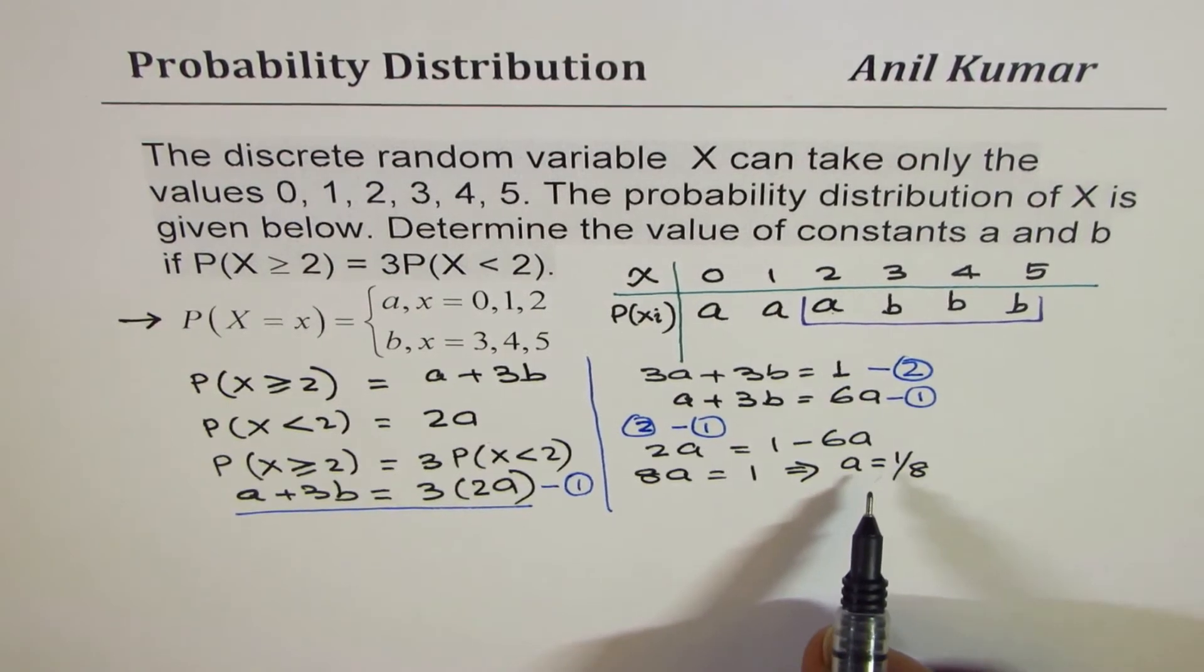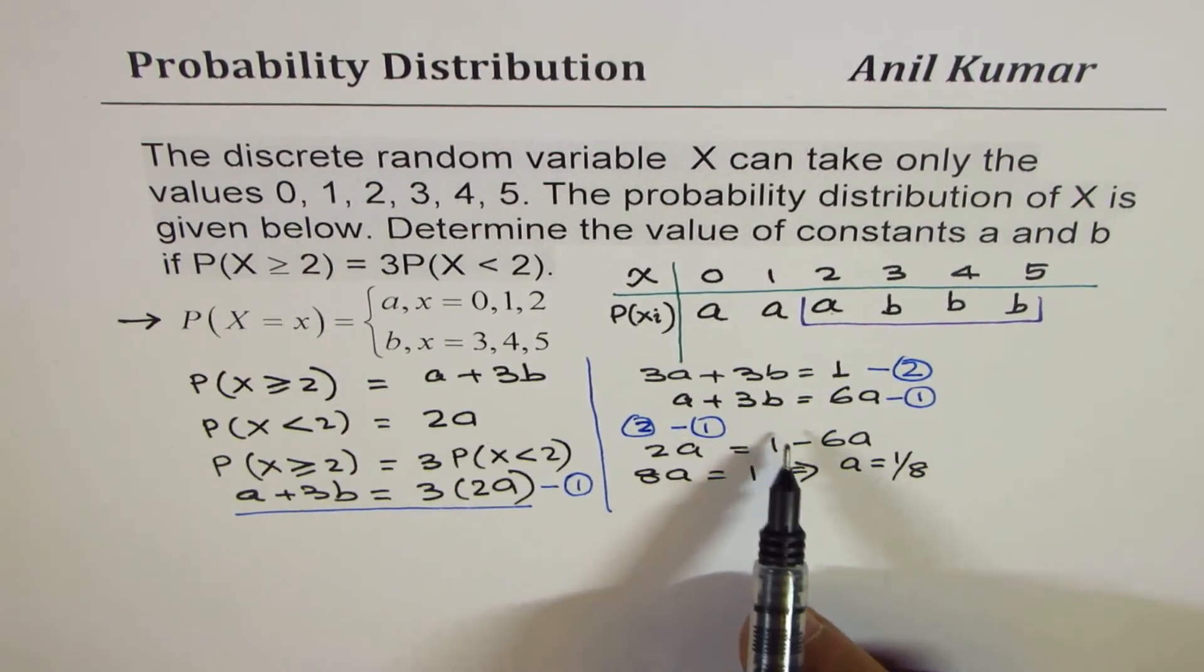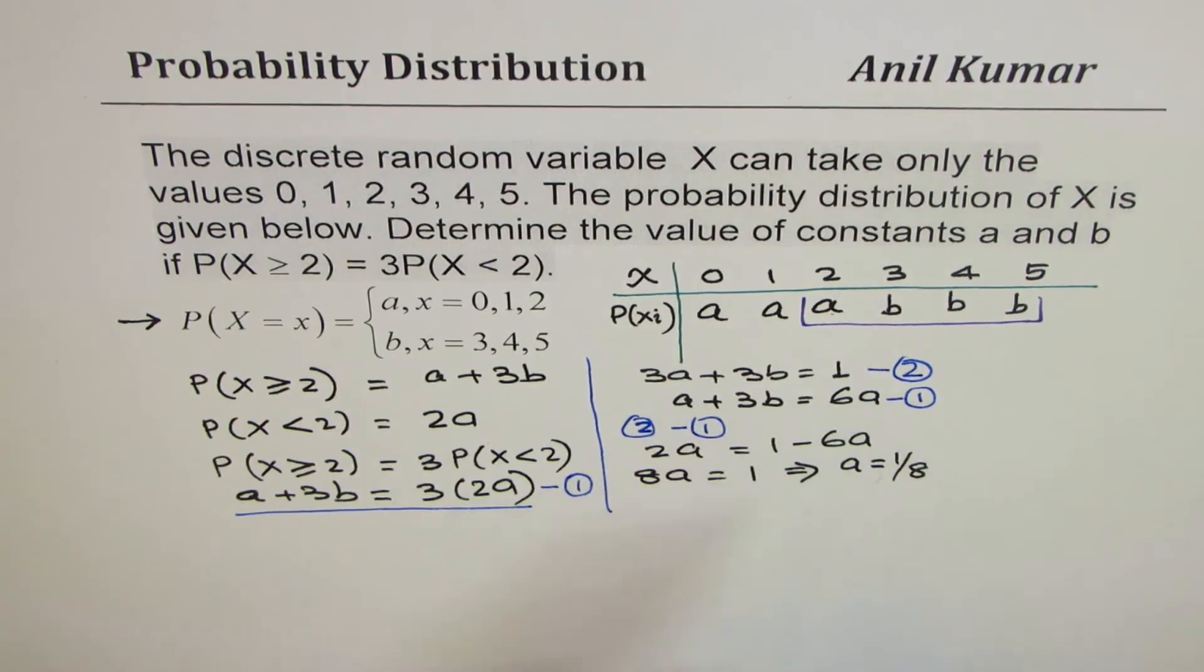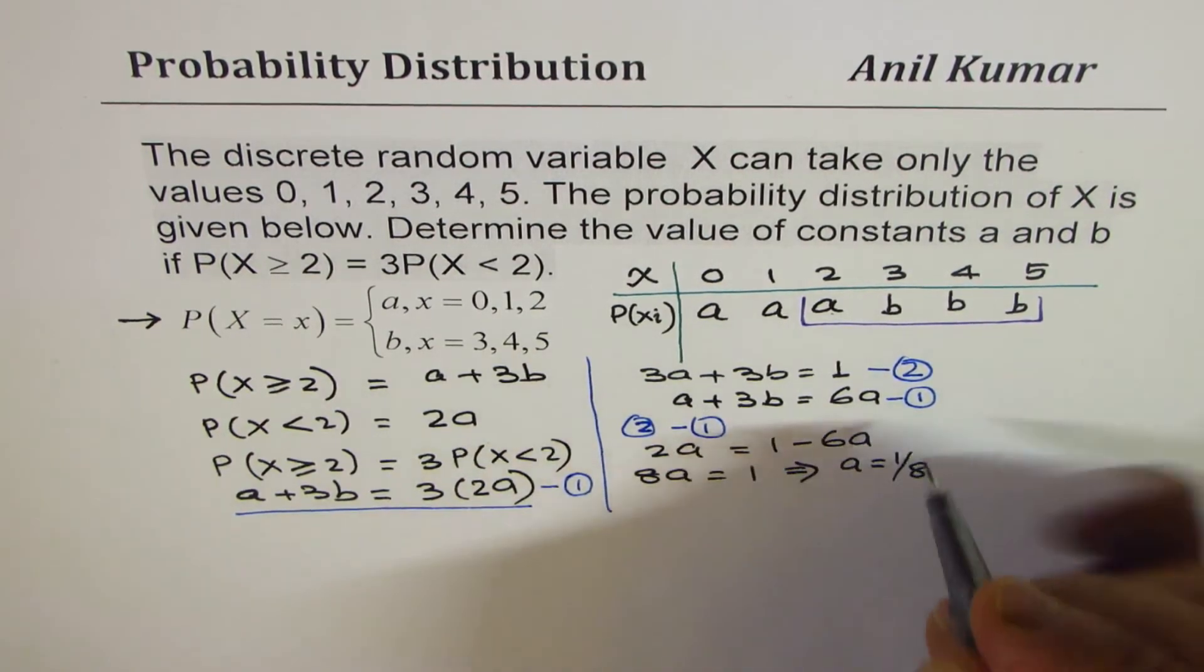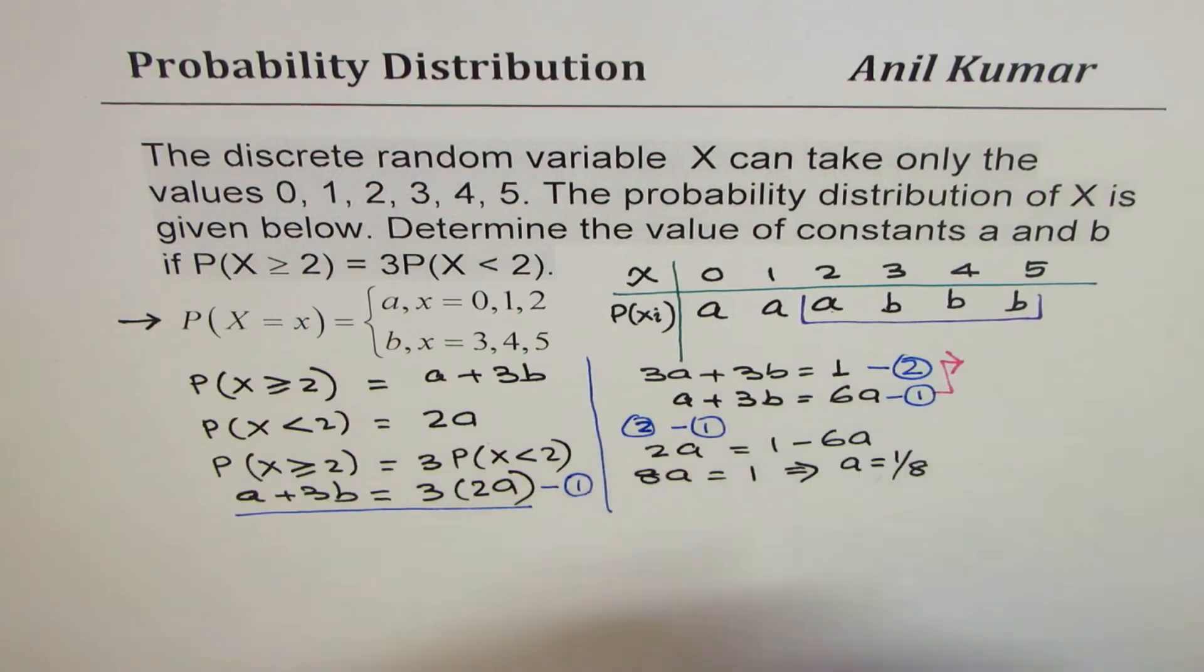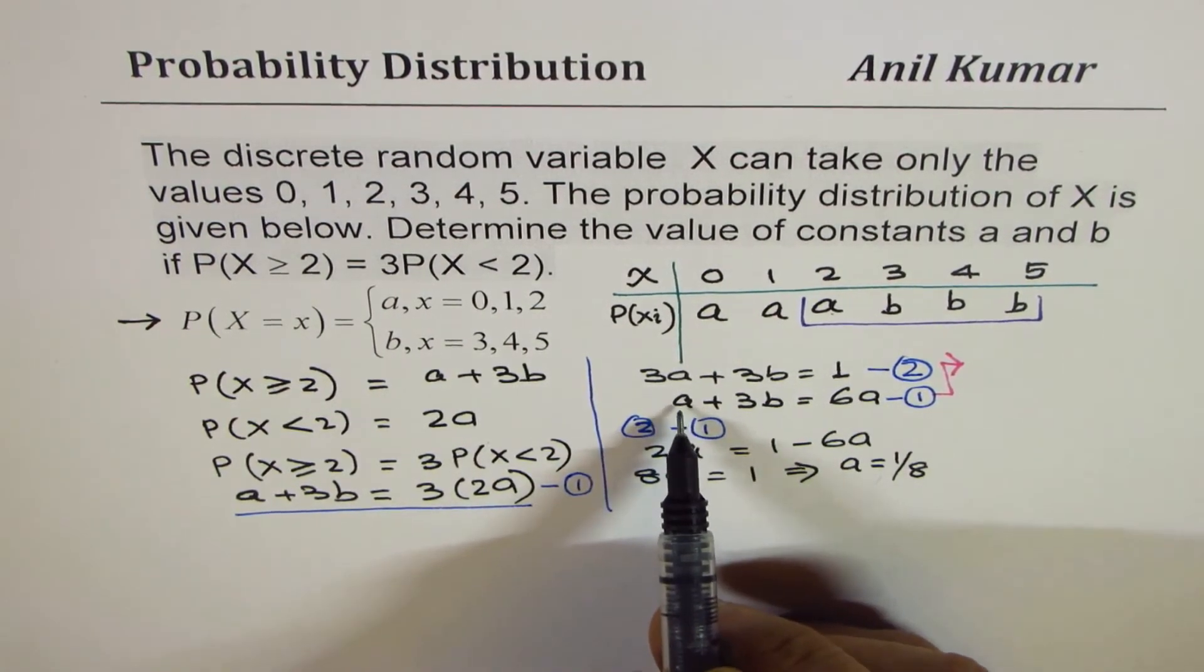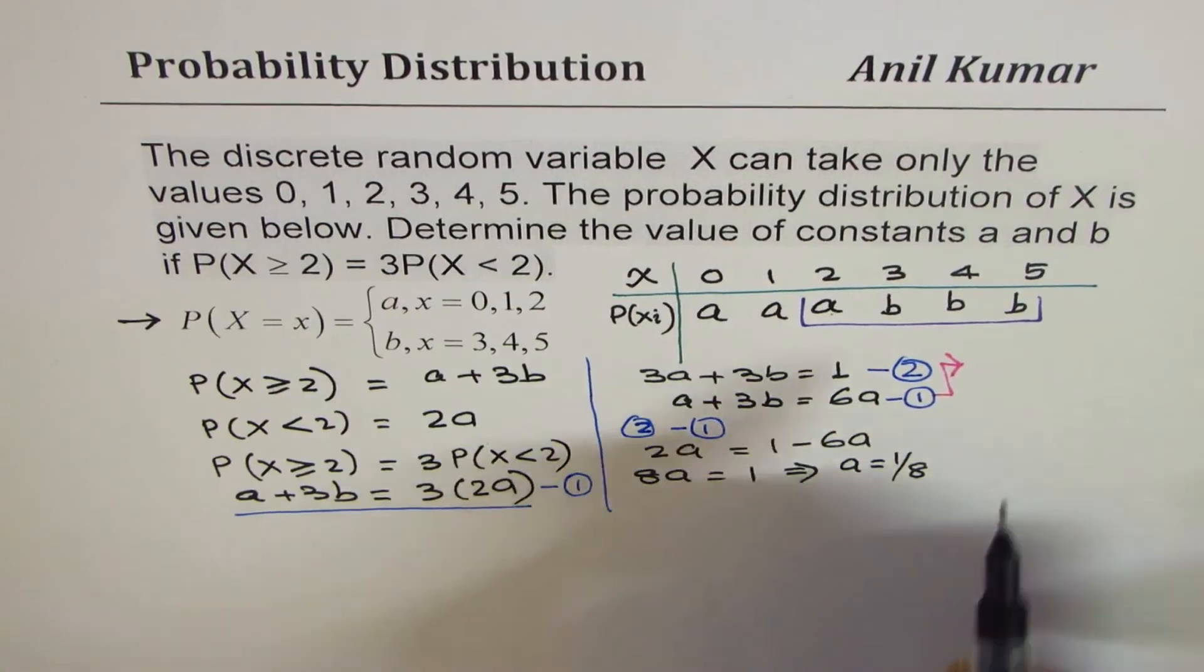So we get the value of a. Now what is b? I could always rearrange this, taking a to the other side. Which I should have done earlier. From here, let me write down what a is. So bringing a to this side, I get 5a = 3b.